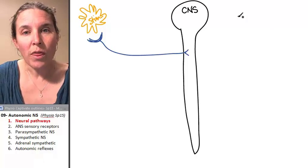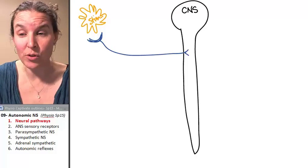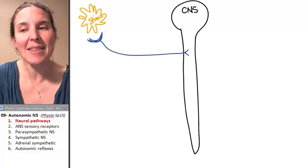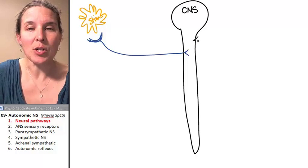We know that processing happens in the central nervous system, and then we mapped out a couple of options.